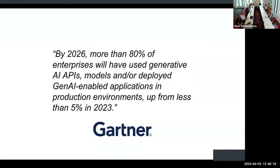Another reason to pay attention to this — in addition to regulatory concerns — is the anticipated huge impact on the workforce. Gartner's estimate is that by 2026, more than 80% of enterprises will have used generative AI APIs, models, and/or deployed applications in production environments. There are also statistics about how much generative AI is likely to change different disciplines and how important its use will be.